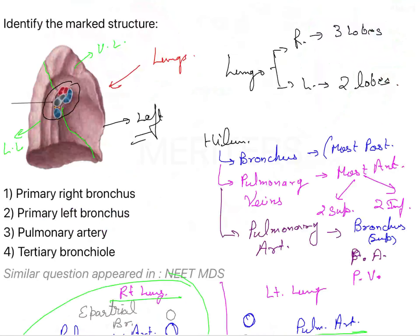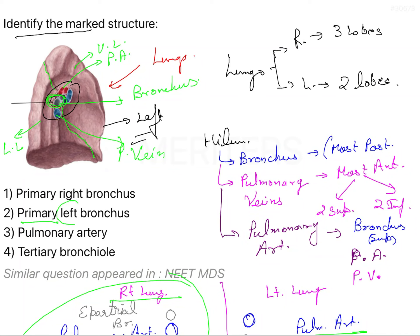Now coming back to the question - identify the marked structure. If you see, most superiorly there is something - superior is going to be your 'Atal,' that is your pulmonary artery. In the middle you are going to have your 'Bihari,' that is bronchus, and lowermost is going to be your vein, that is pulmonary vein. This particular structure is in the middle, and that is going to be your bronchus in the case of the left lung. So it is basically your left primary bronchus. The answer to this question is option second - left primary bronchus.